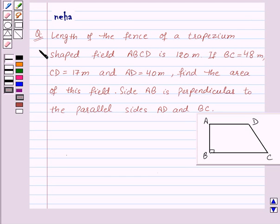Hi and welcome to the session. Let us discuss the following question. The question says: Length of the fence of a trapezium-shaped field ABCD is 120 meters. If BC equals 48 meters, CD equals 17 meters, and AD equals 40 meters, find the area of this field. Side AB is perpendicular to the parallel sides AD and BC.